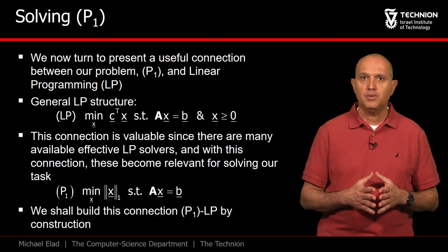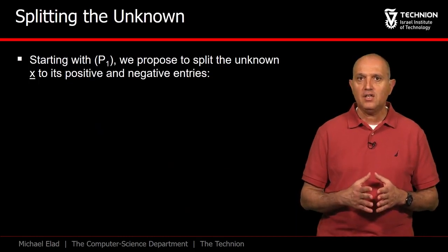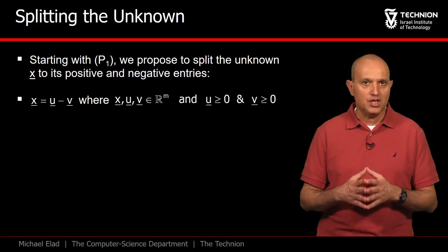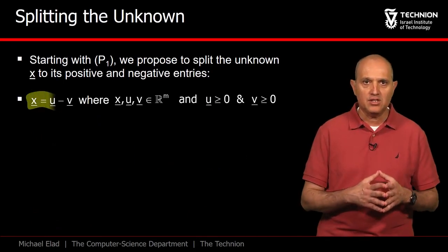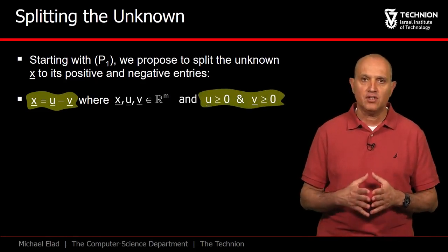So let's build this bridge between P1 and LP. The key idea is to split the unknown into positive and negative entries. The split suggests representing x as u minus v, where both u and v are non-negative vectors.